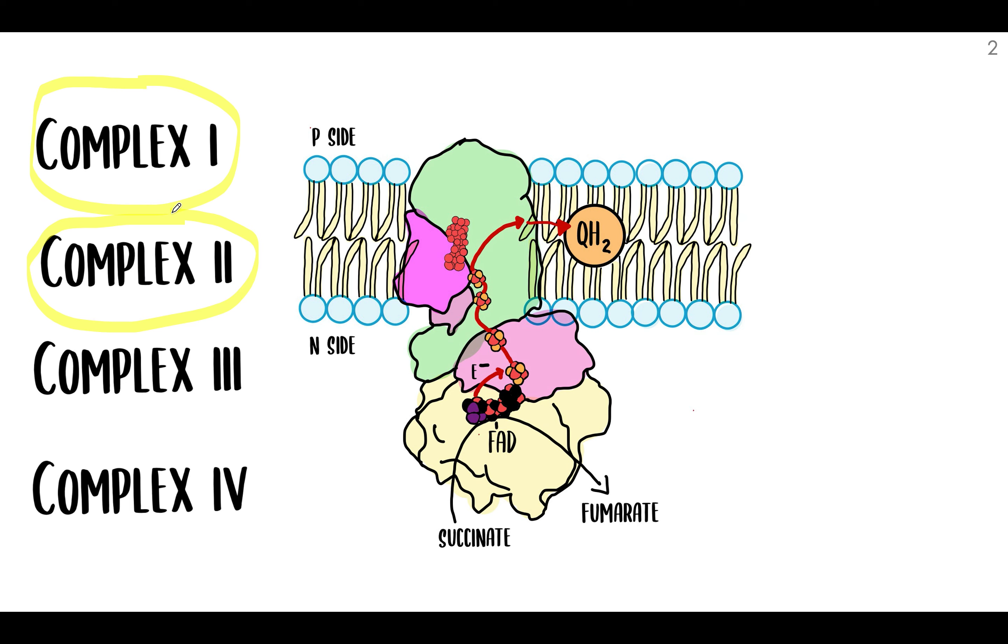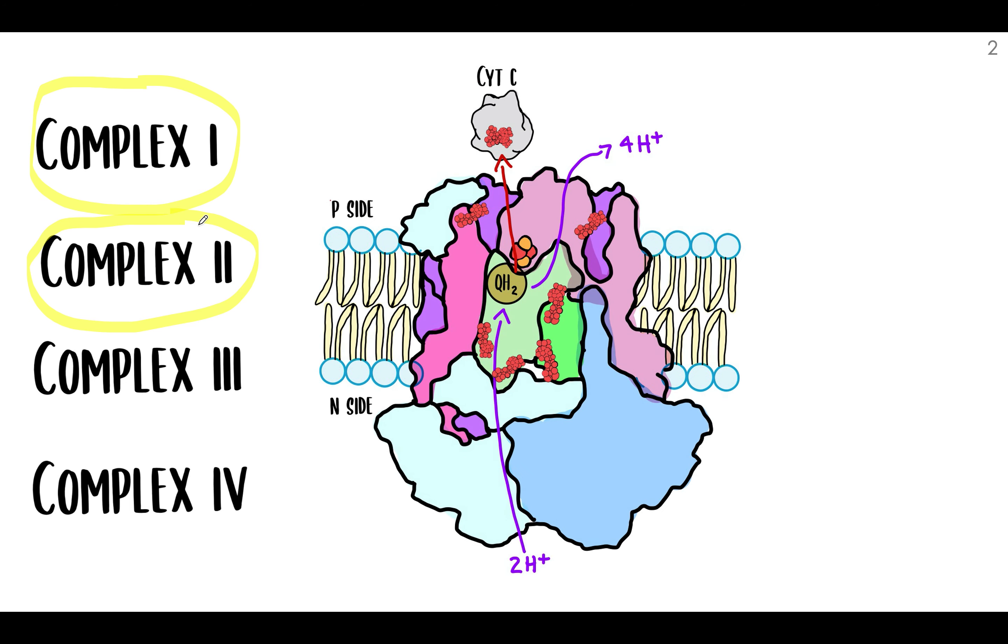So now that we're at Complex III, I have to emphasize that there isn't an order of the first complexes. Complex II leads to ubiquinone, and independently, so does Complex I. Now that that's said, let's talk about Complex III. It is also called ubiquinone cytochrome C oxidoreductase. Long name, right?